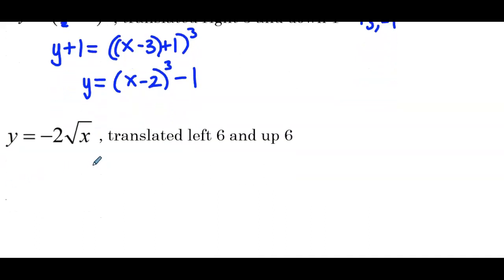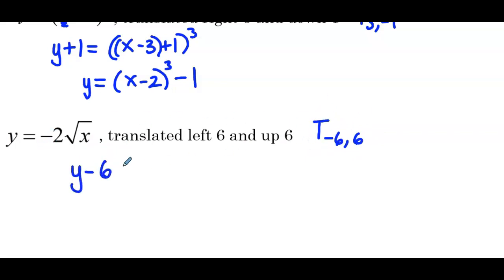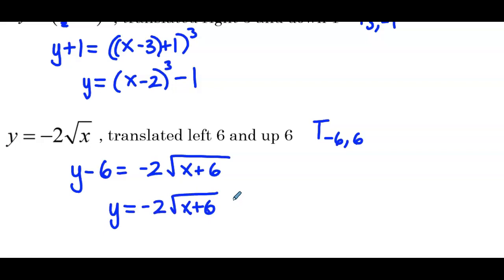Next we have y equals negative 2 times the square root of x, translated left 6 and up 6. Left 6 means subtracting 6 from x, and up 6 means adding 6 to y. This equation has already been scaled, which shouldn't affect our translation. In the equation we do the opposite: subtract 6 from y, keep the negative 2, and inside the parent function add 6 to x. So we get y equals negative 2 times the square root of x plus 6 plus 6. This graph is both translated and scaled.